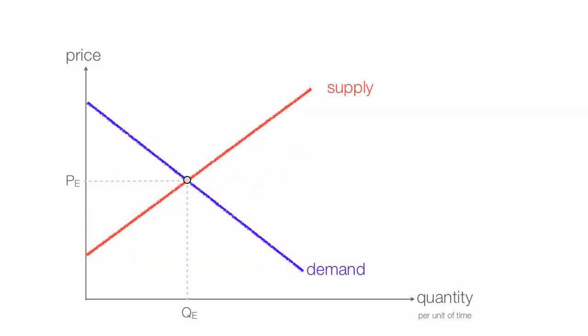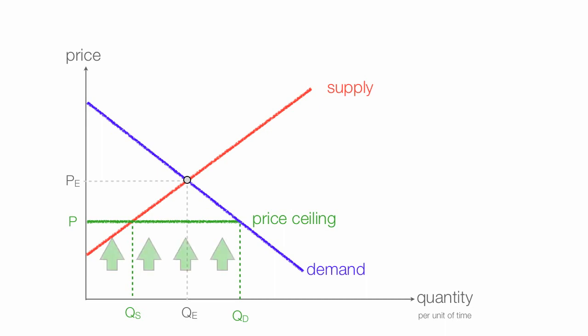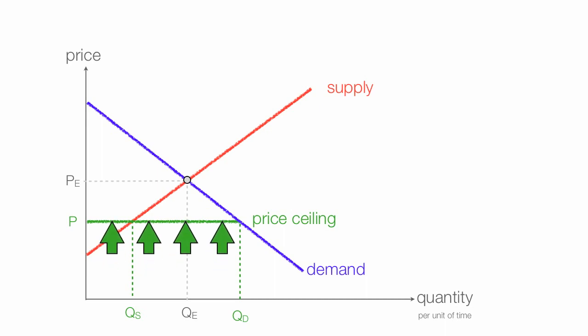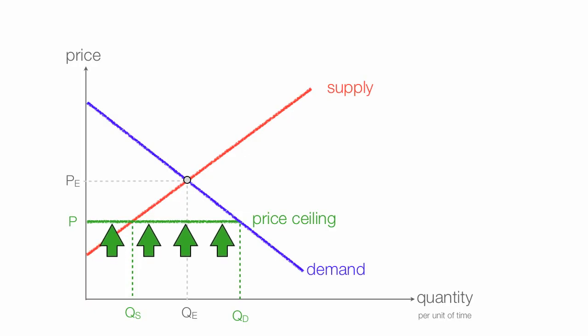Let's imagine the government imposes a price ceiling right here. We'll label that price ceiling. Quantity demanded is there, and quantity supplied is here. A price ceiling is a price the government doesn't allow to rise above — it's a ceiling.